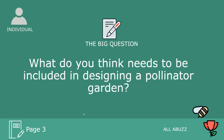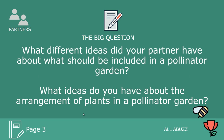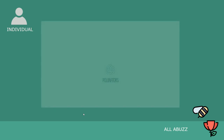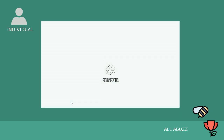So what do you think needs to be included in designing a pollinator garden? Go ahead and pause it and answer the question — you and your partner. What different ideas does your partner have? Write down what are the different things you and your partner said. It's okay if they're different because you have different backgrounds. Also think about what ideas you have about the arrangement of plants in a pollinator garden — do you think that matters?